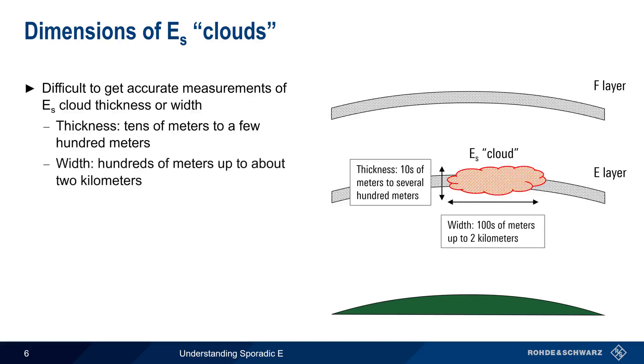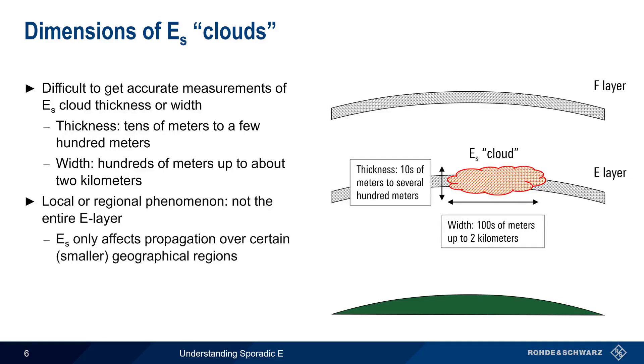It's important to remember that sporadic E is a local or regional phenomenon. That is, it only affects propagation over certain geographical regions. We'll talk more about this on the next slide. This is different from standard F layer propagation at HF frequencies, which tends to be more uniform over hemisphere-sized regions.